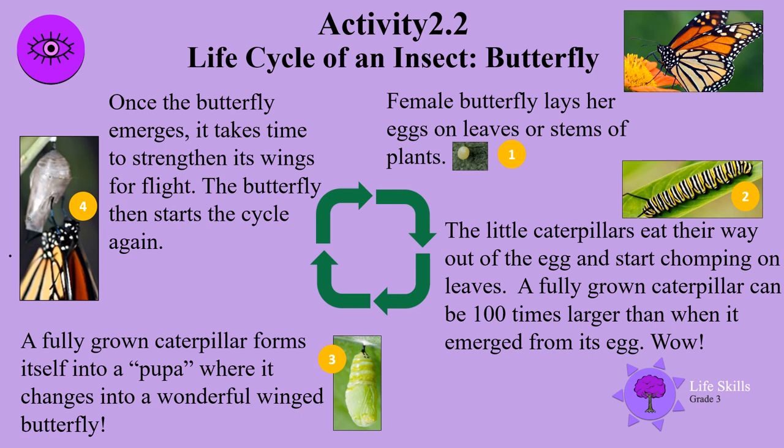Stage 4: once the butterfly emerges, it takes time to strengthen its wings for flight. The butterfly then starts the cycle again.